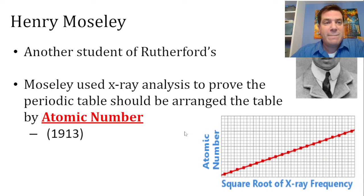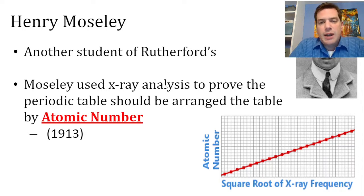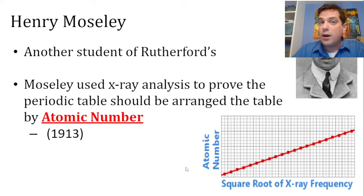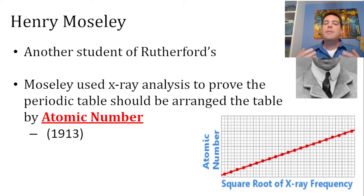Pretty freaking awesome. Our story comes forward a little bit in time — 1913 or so. This guy named Henry Moseley was another student of Rutherford's, and he was using x-rays. You could shine x-rays on atoms, and certain frequencies of x-ray would interact with an atom's nucleus in a certain way. He noticed that if you line the elements up by atomic number — the number of protons — the pattern that Mendeleev discovered, which had some problems where masses were a little backwards sometimes, becomes absolutely perfect.